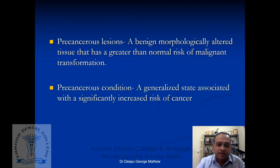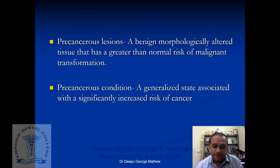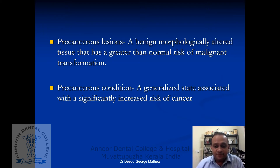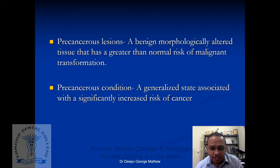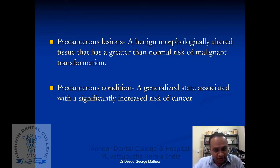A pre-cancerous condition is a generalized state associated with a significantly increased risk of cancer — a generalized disease state where any part of the oral cavity has a chance of turning into malignancy. You cannot pinpoint a particular area in the oral cavity with increased possibility to turn into cancer, because it is a generalized state. A lesion is a localized, morphologically altered area with an increased chance of turning into cancer, while a condition is a generalized state where any part has an equal opportunity to turn into cancer.